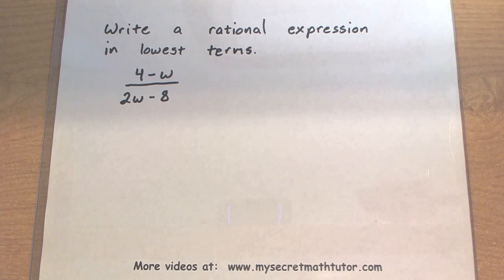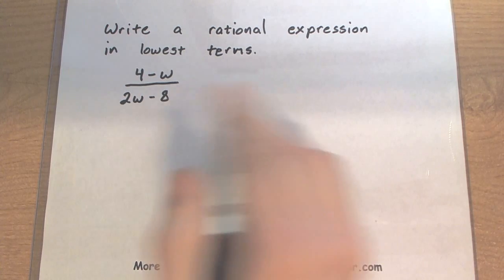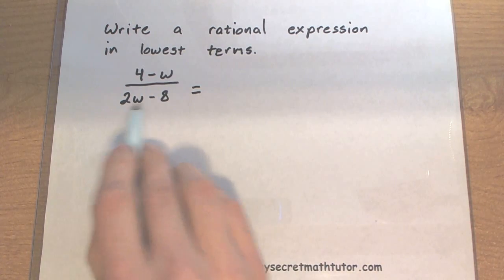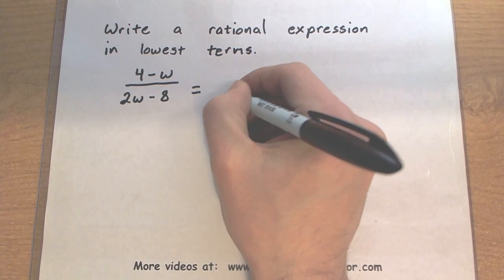Most of the time when we write a rational expression in lowest terms, we're looking for common factors in the top and in the bottom to cancel out. So when I'm looking at this one, I look at the bottom and say it looks like I can factor out a 2. Let's go ahead and do that.